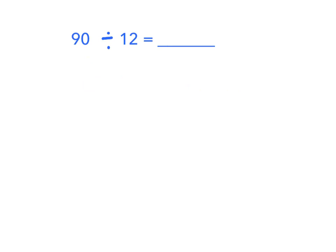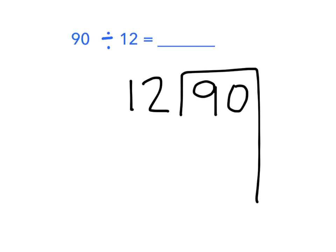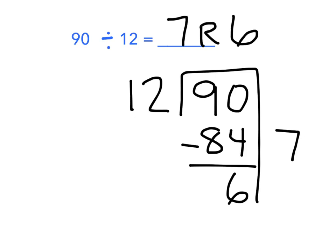I'm going to solve this using partial quotients. Now I know that 12 goes into 90 seven times, and that would give me 84. When I subtract, I get 6. So my answer is 7, remainder 6.